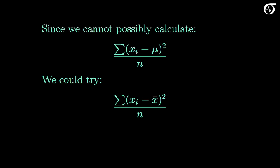Since we cannot possibly calculate the sum of squared distances from the true mean when the true mean is unknown, we might try simply replacing the true mean with our best estimate of it — the sample mean x-bar. And that sounds reasonable enough, but there is a bit of a problem. Of all the values we could possibly subtract in this formula, subtracting x-bar makes this sum as small as it possibly could be.